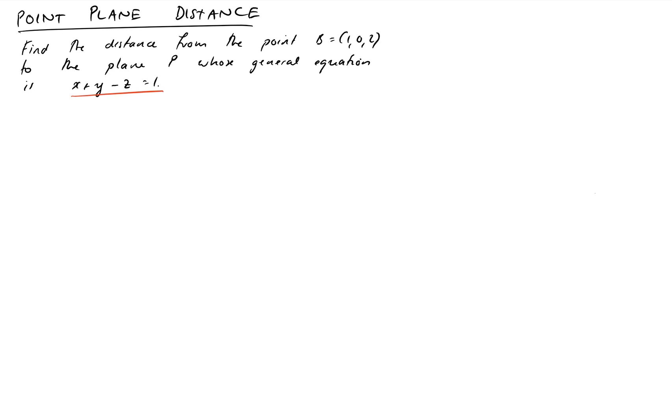So before we can do this, let's just sketch ourselves a picture so that we can see what the geometry of the situation is and then we can figure out how to tackle it with the vectors. We have a plane, we don't need to draw it accurately, we just need a representation of it, and we've been given a point out in space. We want to know the distance from this point B down to our plane at right angles.